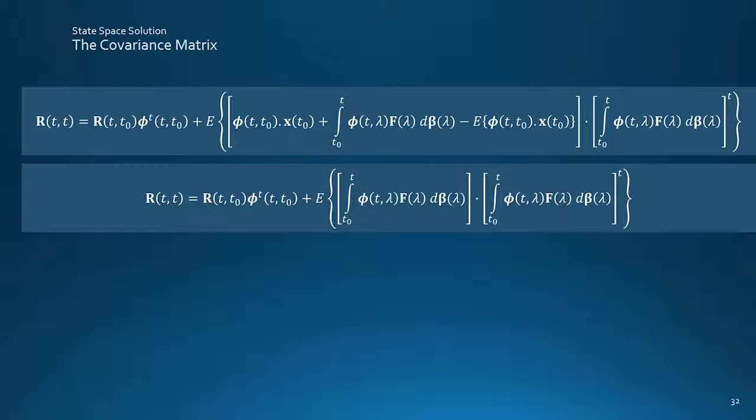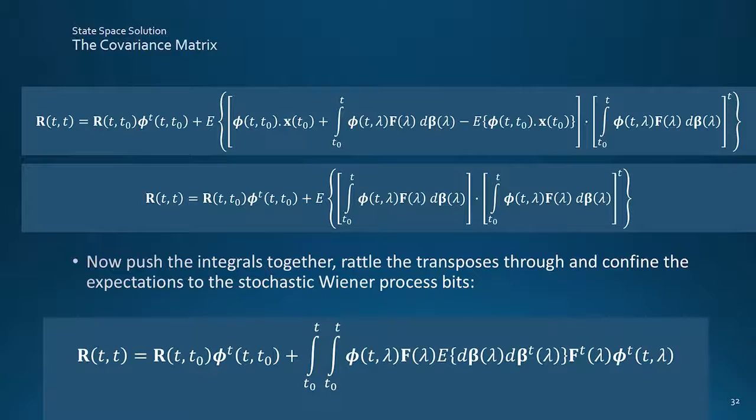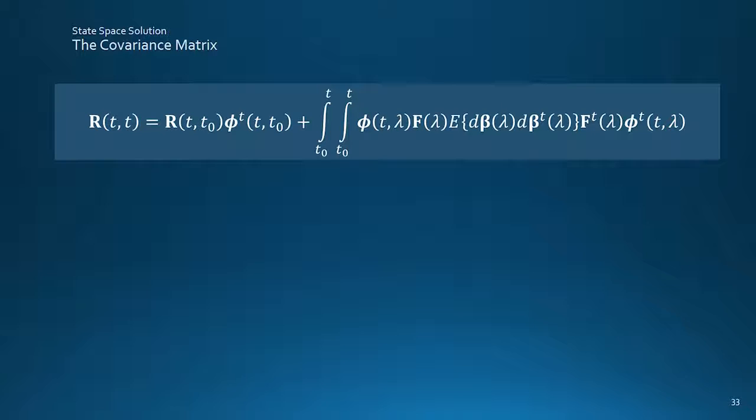Now it's OK here to shove the integrals together, and during the process apply the transposes to the individual terms in the second bracket, switching around their order, and sliding in the expectations at the same time to get this result. An improvement. This is the point at which the reason for starting with the differential form of the state equations with the Wiener process instead of white noise becomes important, as this integral term would otherwise be lost in the bad behaviour of white noise.